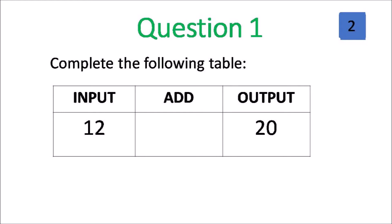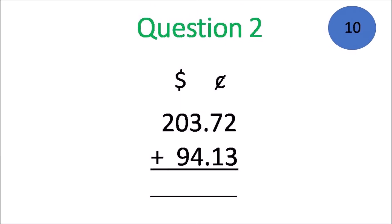So this is the easy one, you should be finishing off question 1 and we move on to question 2. $203.72 plus $94.13, no regrouping. If you need to use sticks or circles, go right ahead. I just need the right answer.